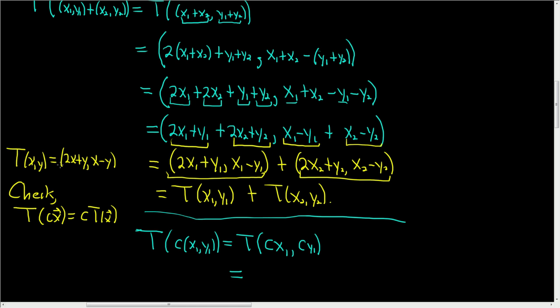And now we'll apply T to this vector. So this is equal to, well, here's the formula for T. So it's 2x, so it's parentheses 2. And our x is cx1. And that's plus y, so that's cy1. This is our x, this is our y.